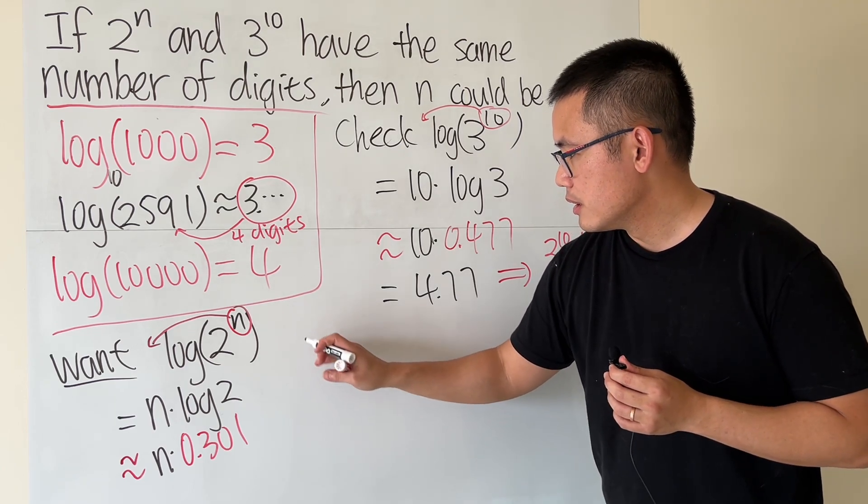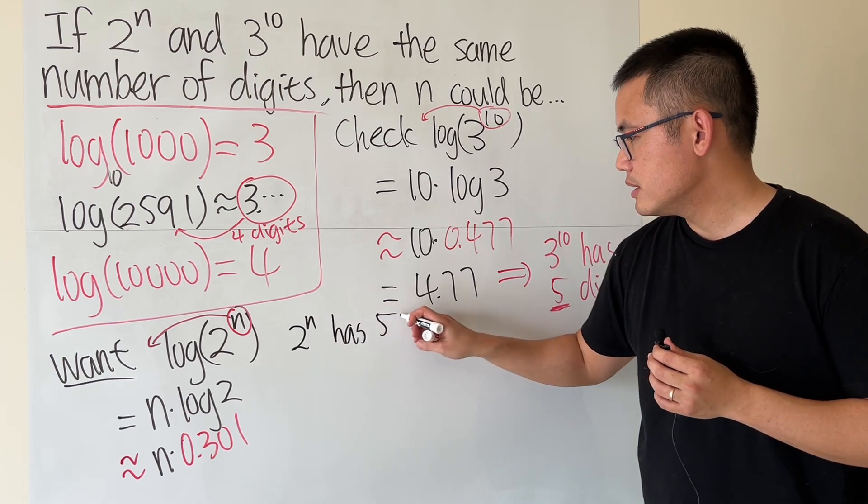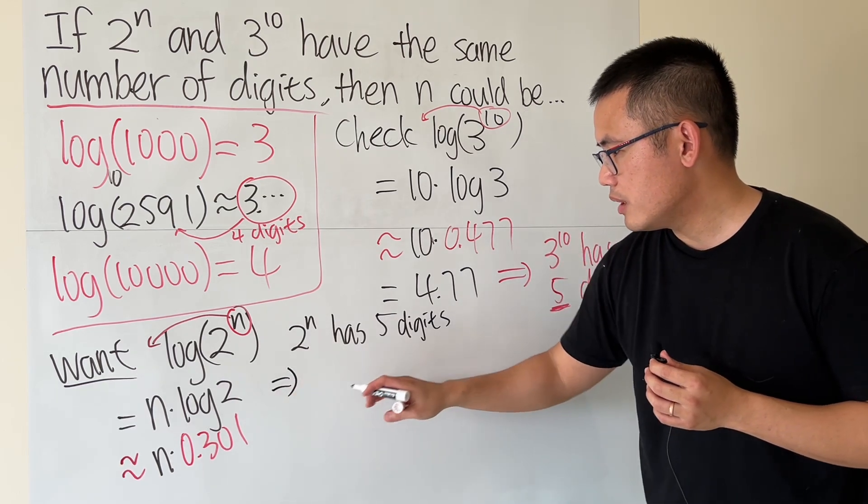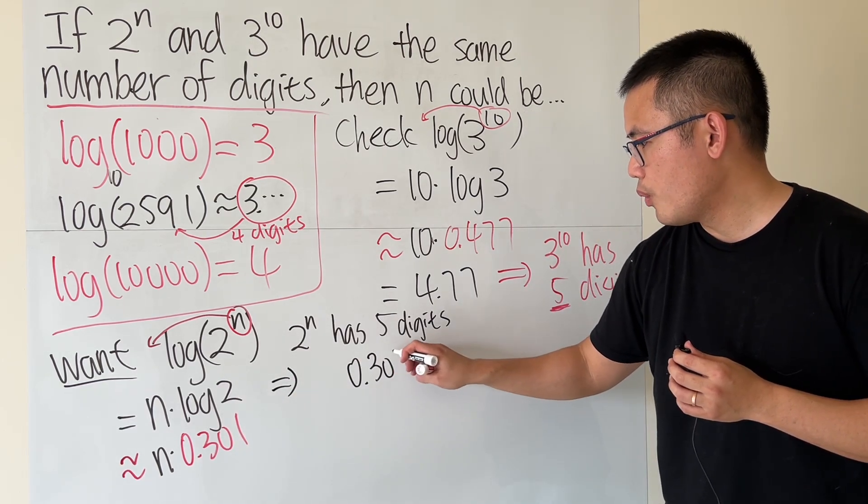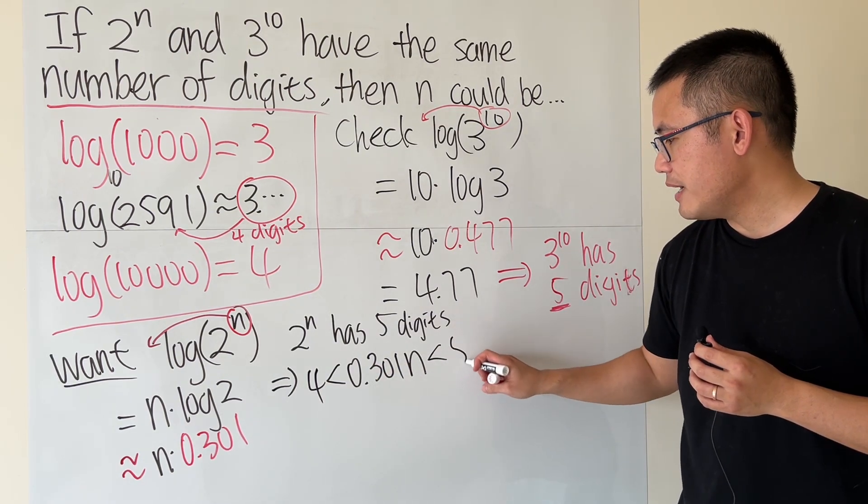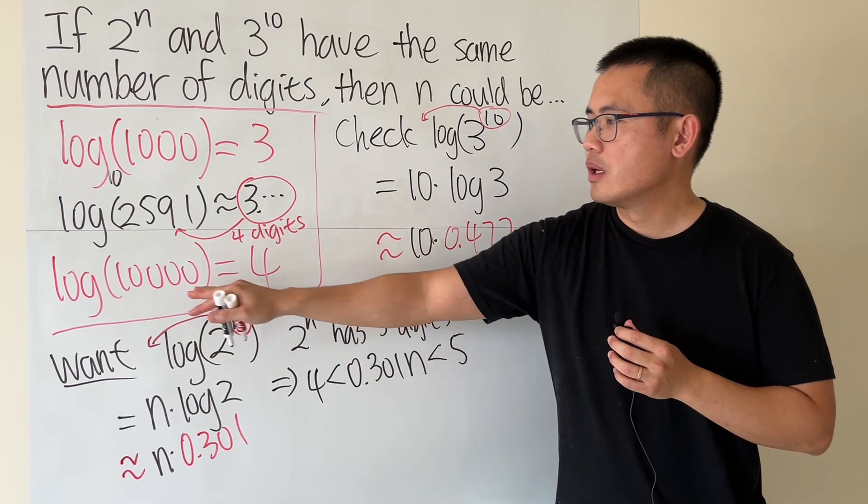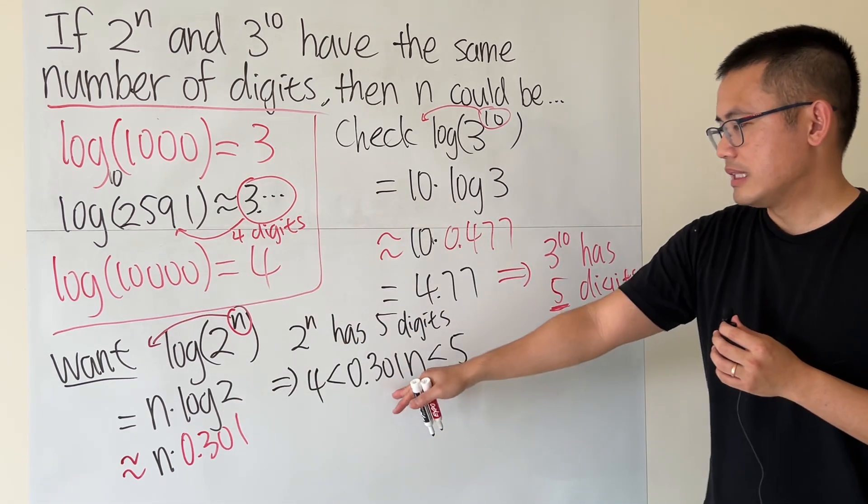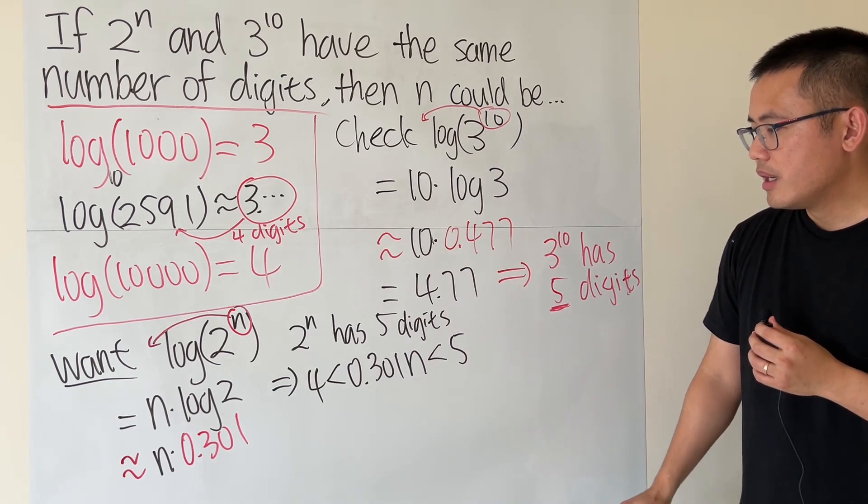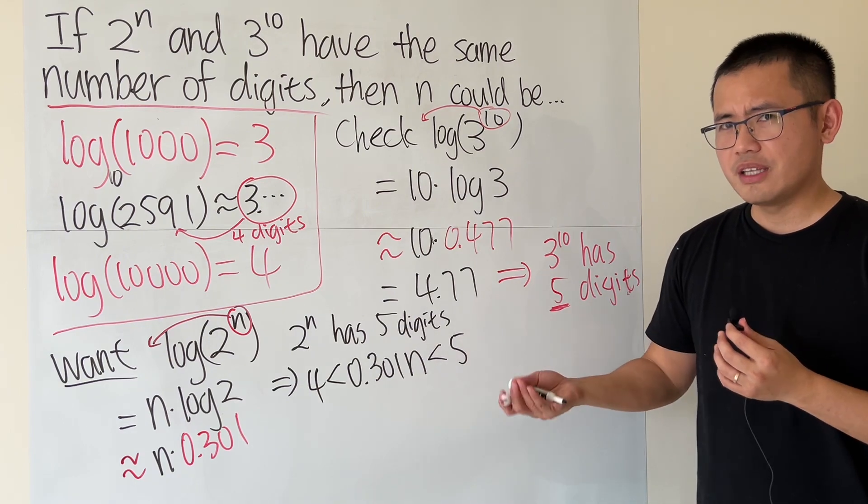So let's just write this down. 2^n has 5 digits. This implies that we will have to make sure this, which is 0.301 times n, has to be between 4 and 5. Technically, it has to be equal to 4, but if it's equal to 4, that means log of 10,000. And it's not possible for that to be 10,000. So just that it's okay. And now, you can just use the answer choices, or you can divide 0.31 on both sides by using the answer choices. It's easier.